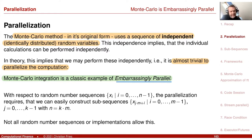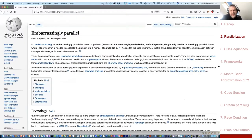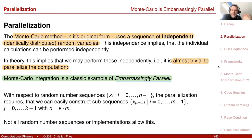The term 'embarrassingly parallel' is a technical term from distributed computing. A problem is embarrassingly parallel if you can easily split it into sub-problems that can be calculated in parallel. You can look this term up, for example on Wikipedia, and you will also find that Monte Carlo is an example of this.